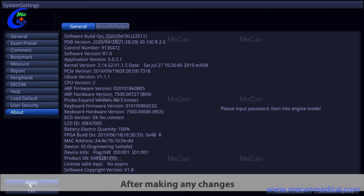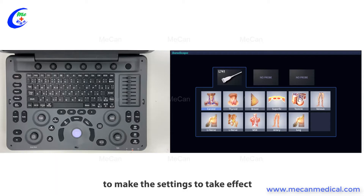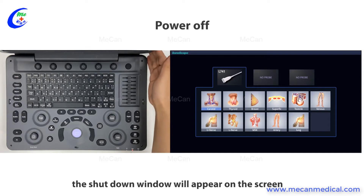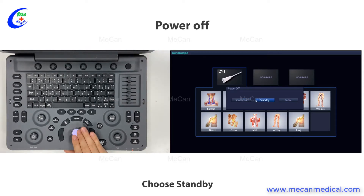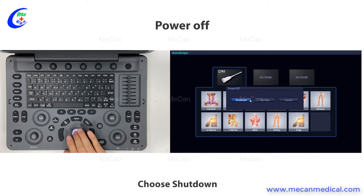After making any changes, pressing the apply button is necessary for the settings to take effect. Press the power button and the shutdown window will appear on the screen. Choose standby — the device will go to standby mode and boot up in several seconds the next time you press the power button. Choose shutdown to shut down immediately. Cancel is used to cancel the shutdown procedure.